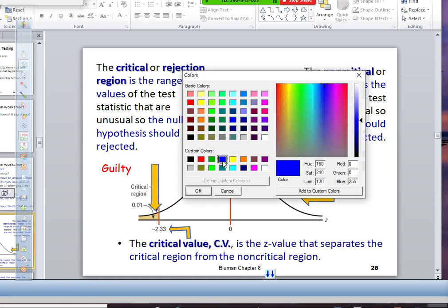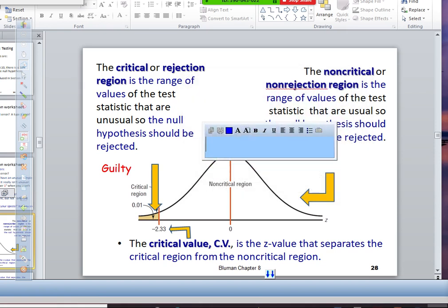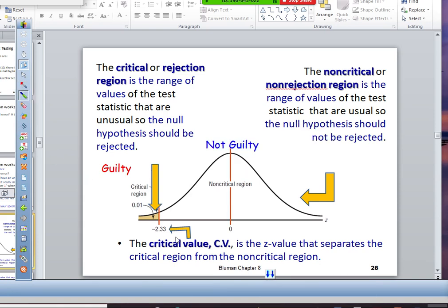So very often, we like to draw this parallel of guilty and not guilty. So this region over here, sorry, this range over here, we would say that you're in the critical region, the guilty region. And this is where we reject H-naught.